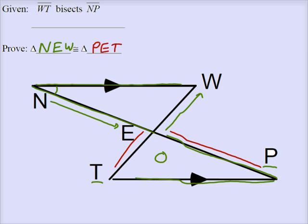So please also note that we have these arrows on segment PT and on segment NW, and those arrows indicate parallel lines. So that's other given information, and NW is parallel to PT.